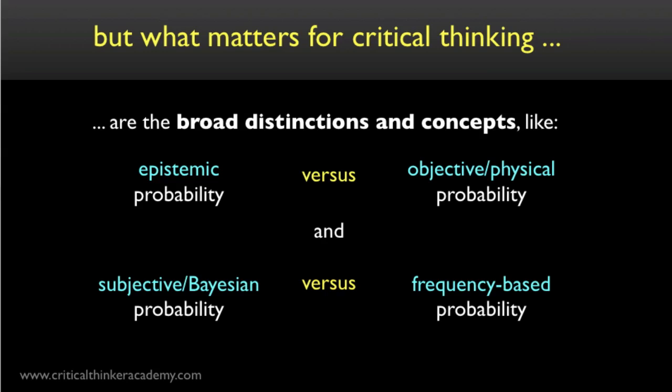From a critical thinking standpoint, however, I don't think that much of this matters. What matters are the broad distinctions, like the distinction between epistemic probability and physical probability, or the distinction between subjective Bayesian approaches and frequency approaches. Critical thinking about probabilities and probabilistic fallacies requires a certain level of basic philosophical literacy, but I don't think it requires anything beyond what we've covered here.